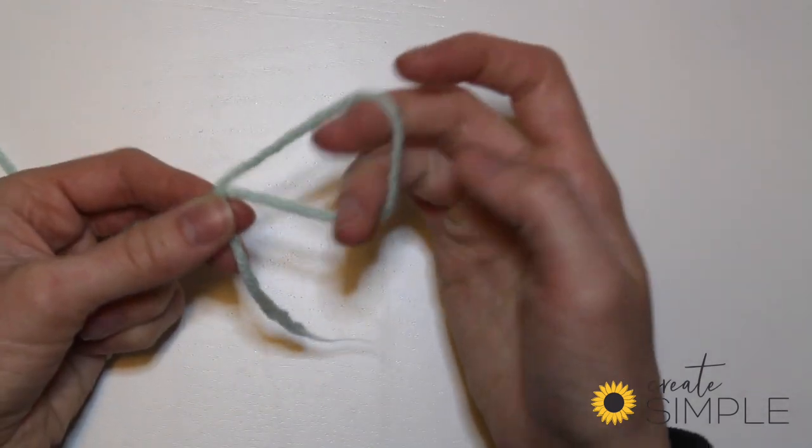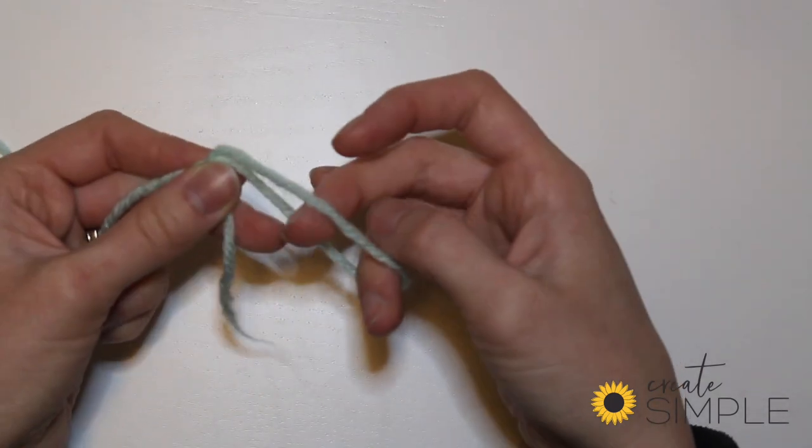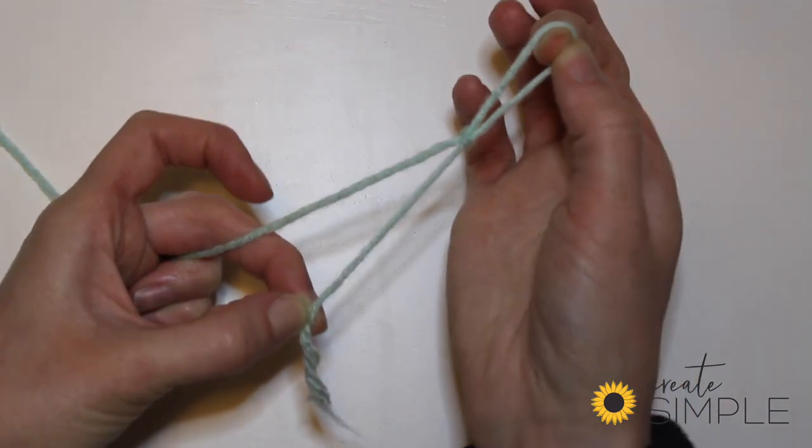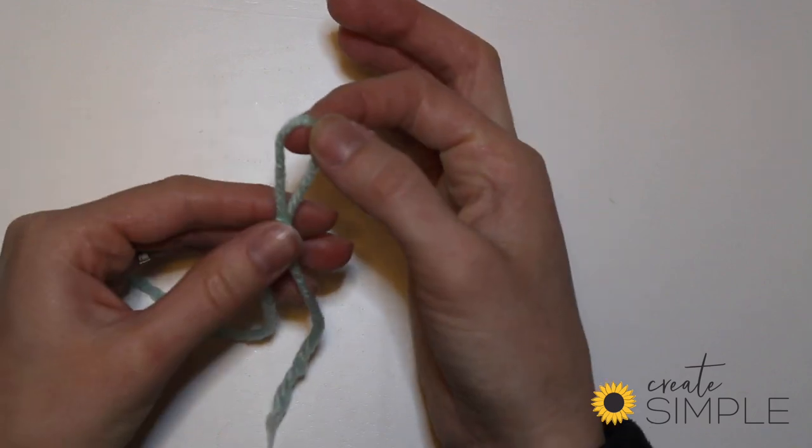We'll do that one more time. Again, you just make a circle like this, hold onto your tail, don't let the tail go through like a knot. You'll just pull like so. That's how you start every project.